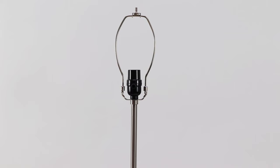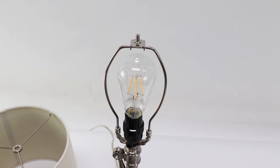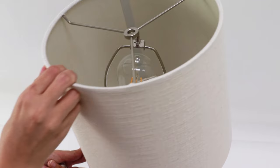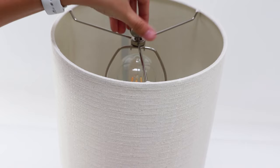Secure a light bulb in the socket at the top of the lamp body. Place the shade on top of the harp. Screw the finial to the top of the harp above the shade to secure the lamp body and shade together.